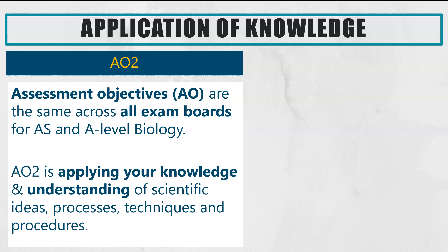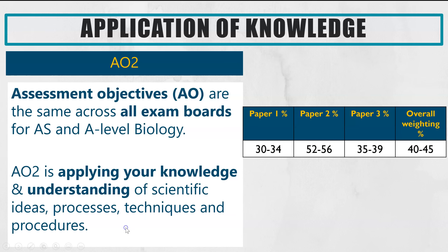AO2, or assessment objective 2, means the ability to apply your knowledge and understanding of scientific ideas, procedures, and techniques. We've got here the percentage of questions which will be AO2 on papers one, two and three, and therefore the overall weighting approximately for your entire A-Level. You can see that almost half of your A-Level will be application questions, which is one of the reasons why students are really requesting one of these application videos.